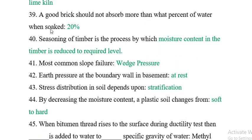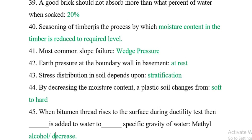Question 39: A good brick should not absorb more than 20% of water when soaked. Question 40: Seasoning of timber is the process by which the moisture content in timber is reduced to the required level. Question 41: The most common slope failure is the wedge failure.